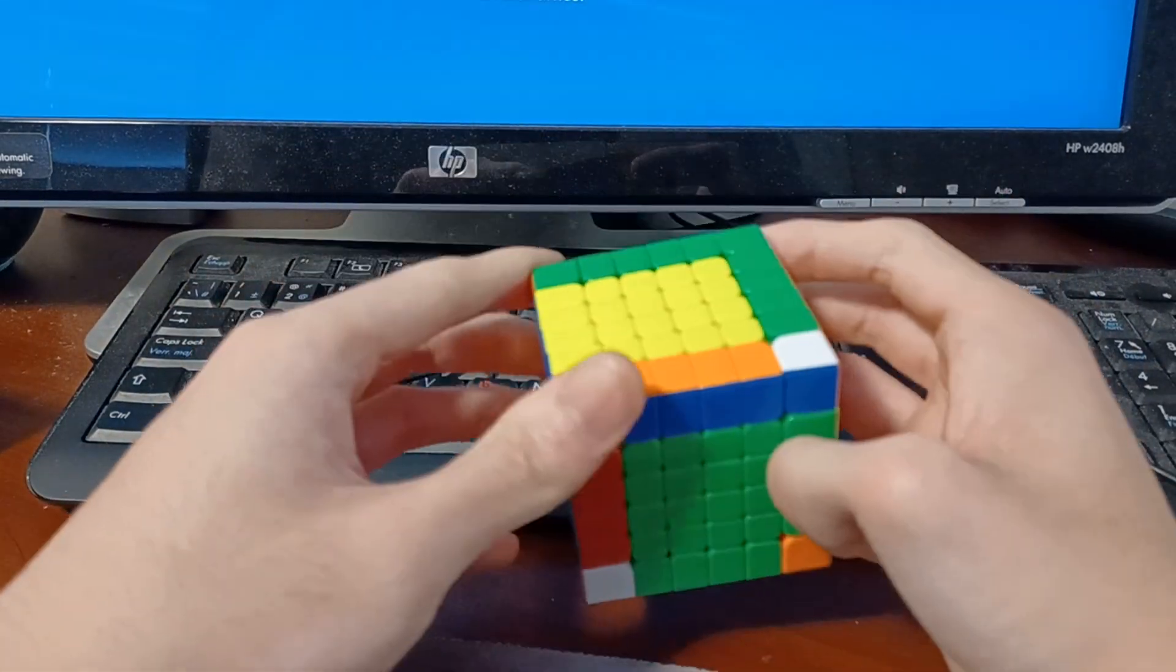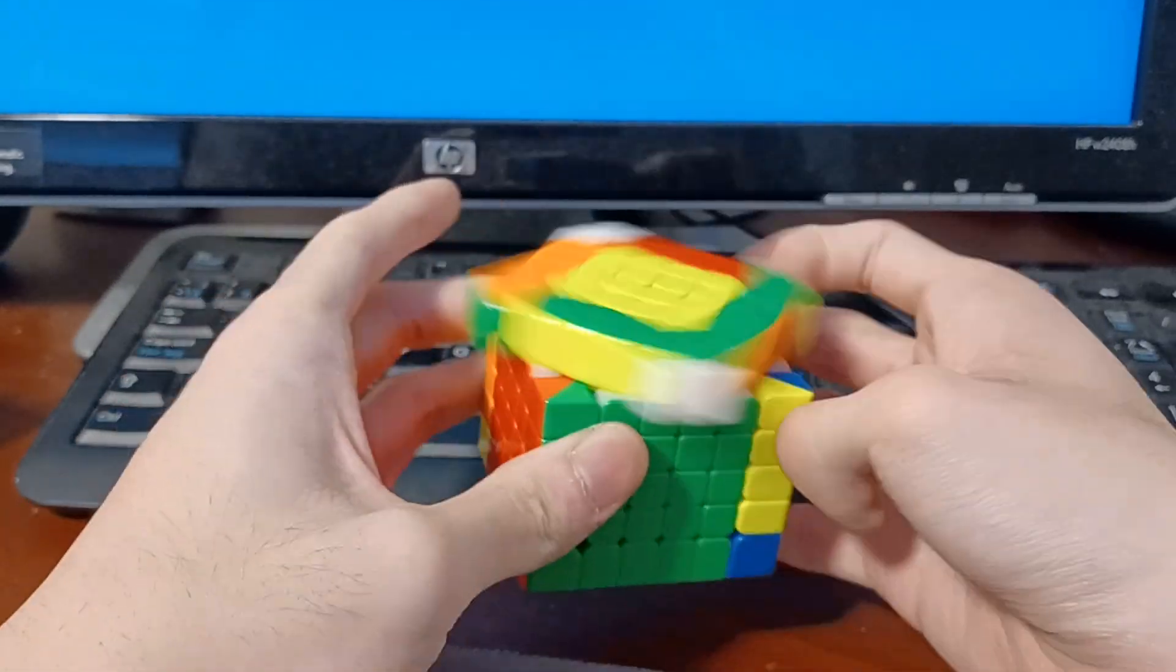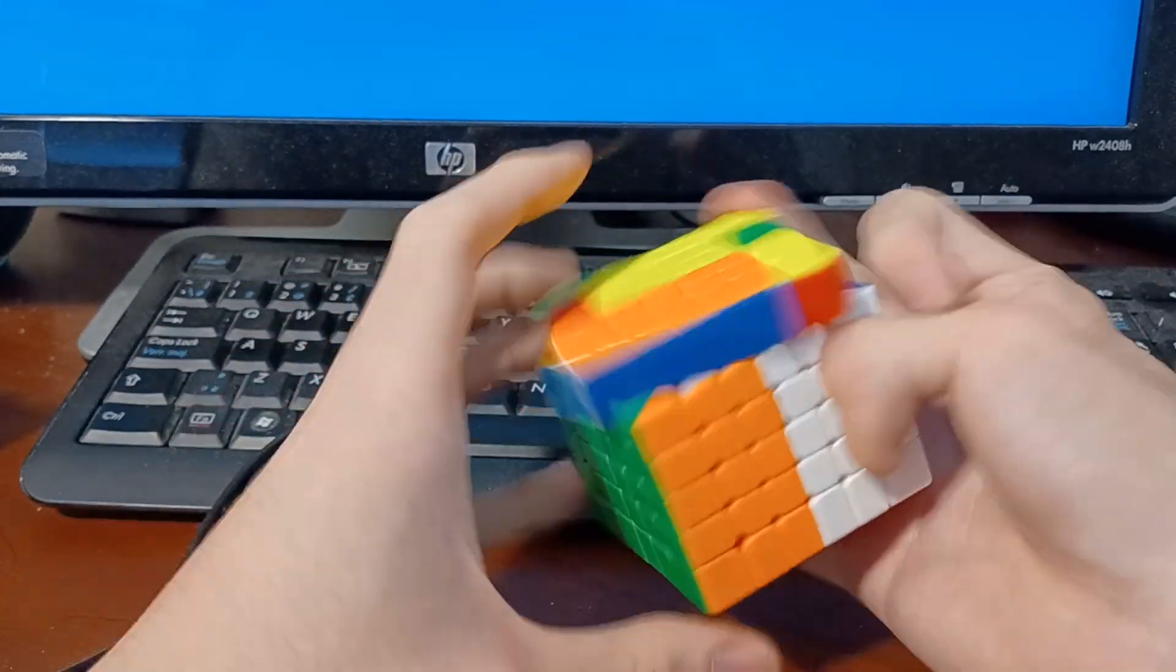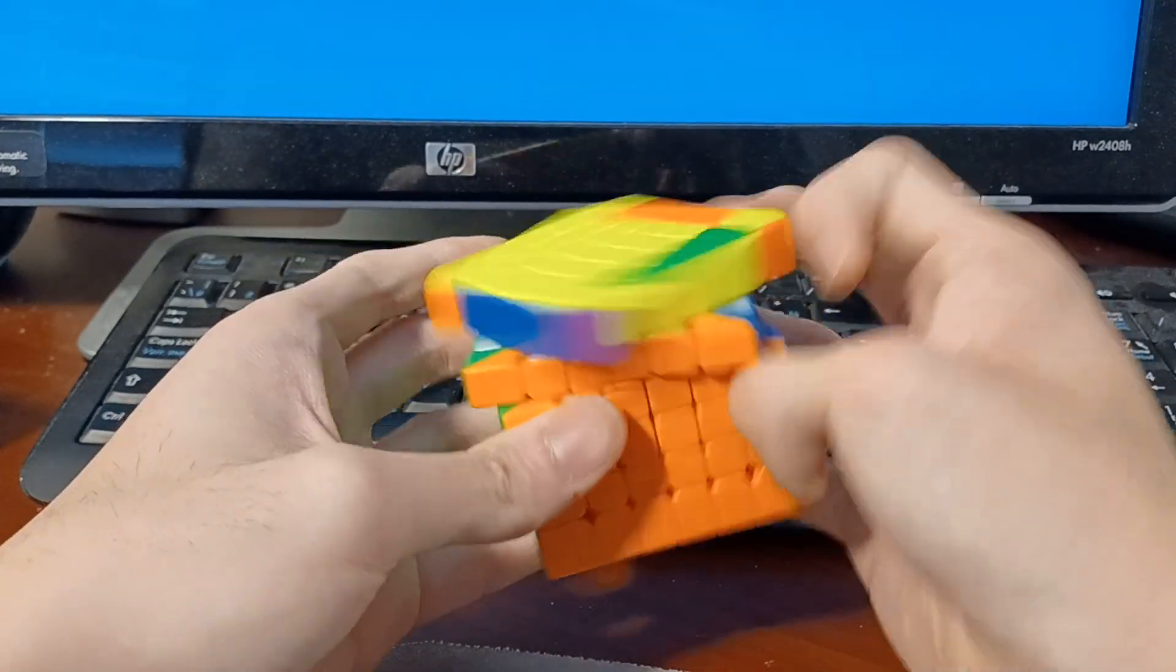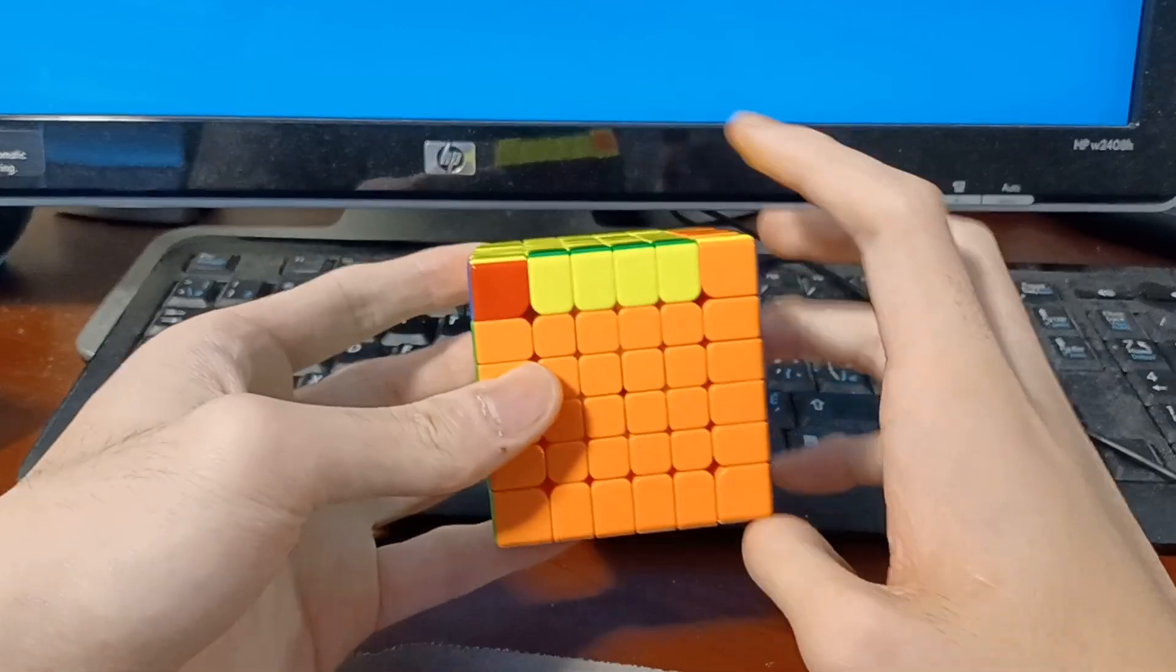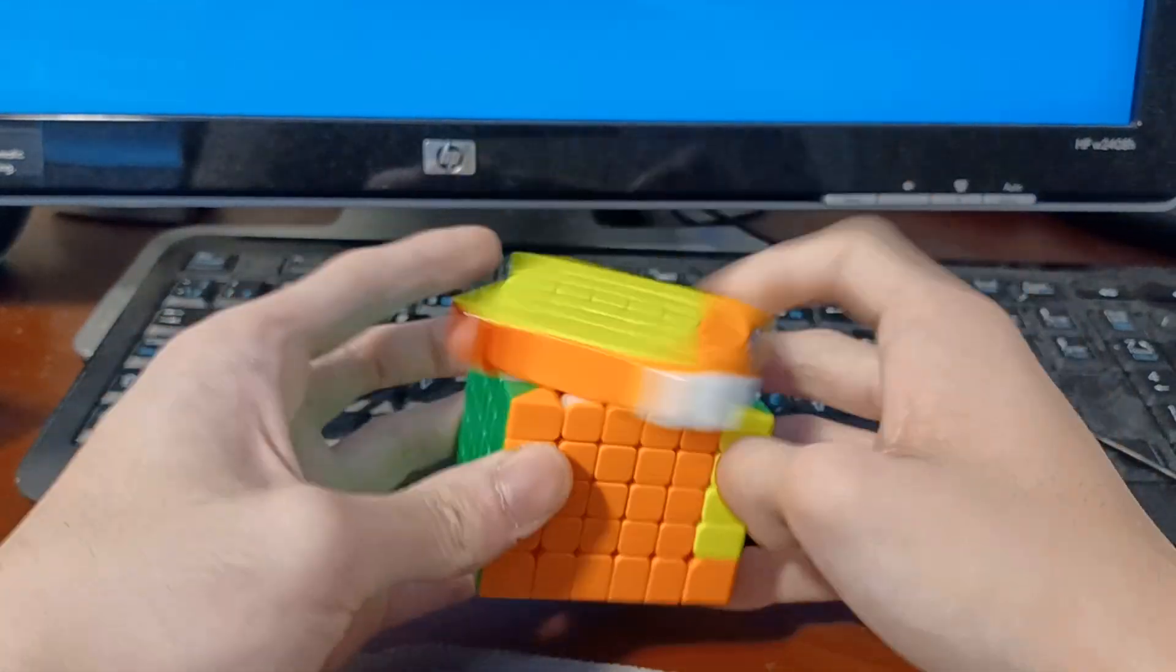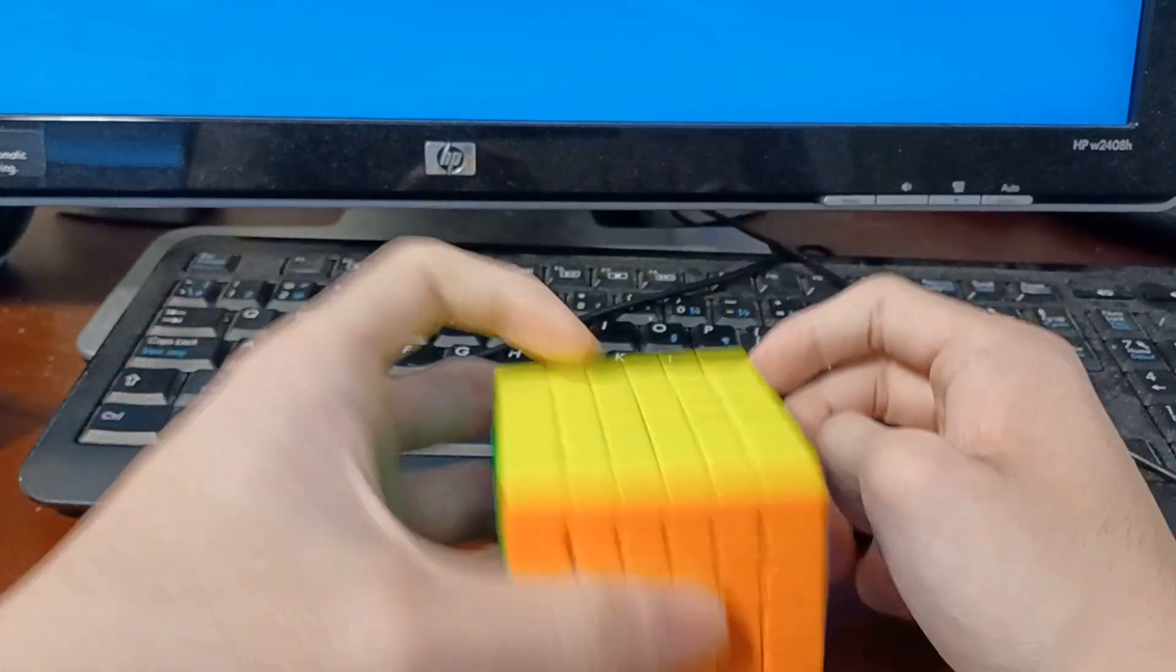Last two edges. I almost did the wrong algorithm. Don't do that. Finally, three by three stage. With parity. So here, obviously, you do the parity here. So that leaves you with all corners. This looks like a jperm. So from here, it looks like a jperm. So I'm going to immediately look over here once all is done to see if I have parity. And I don't. So, jperm and that's it.